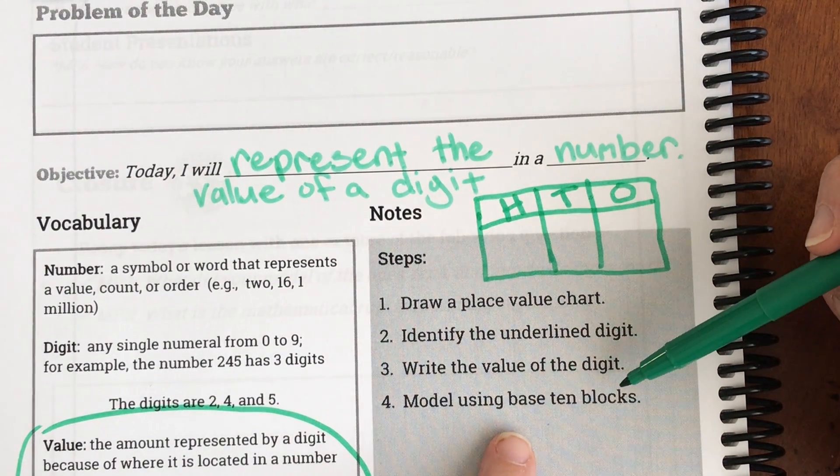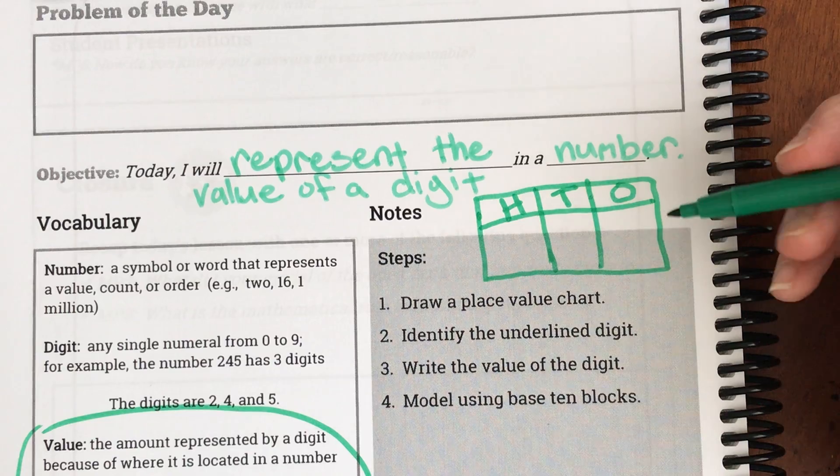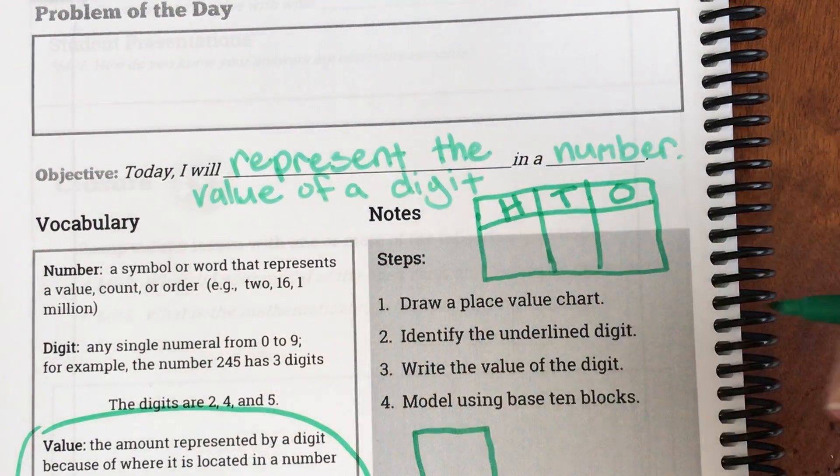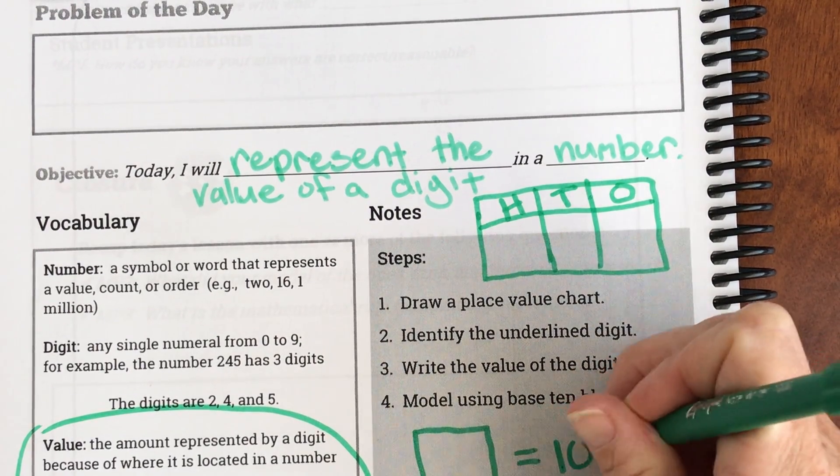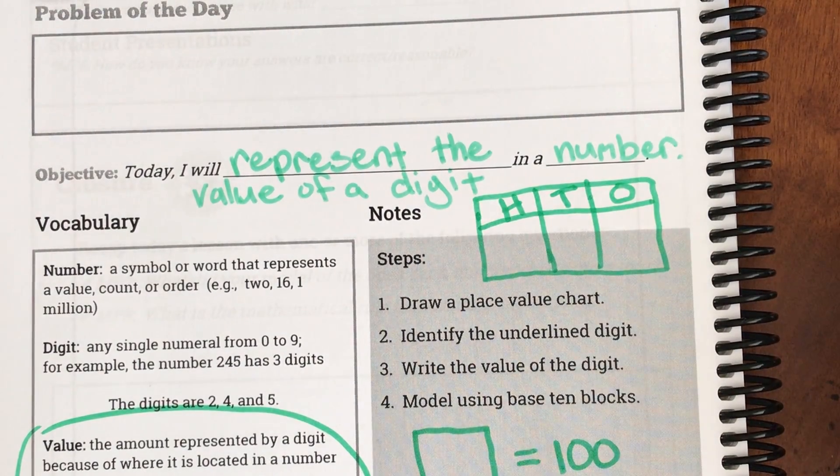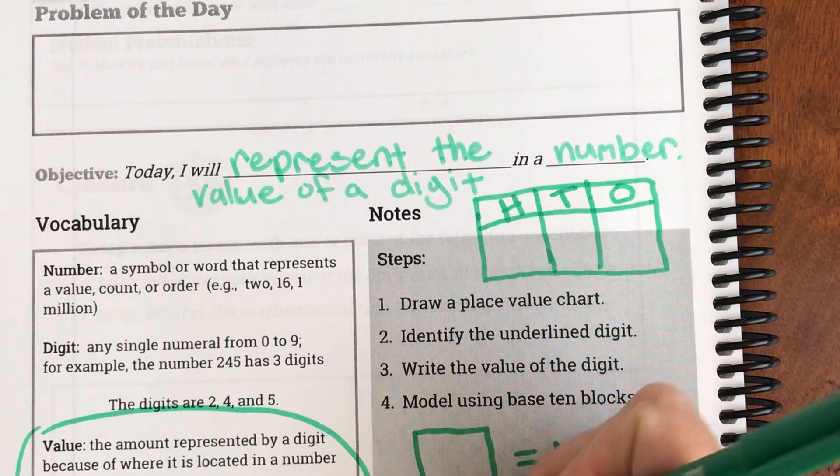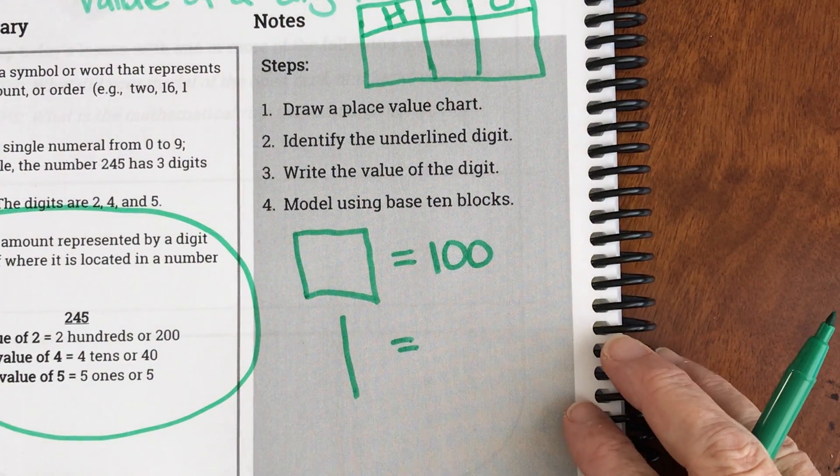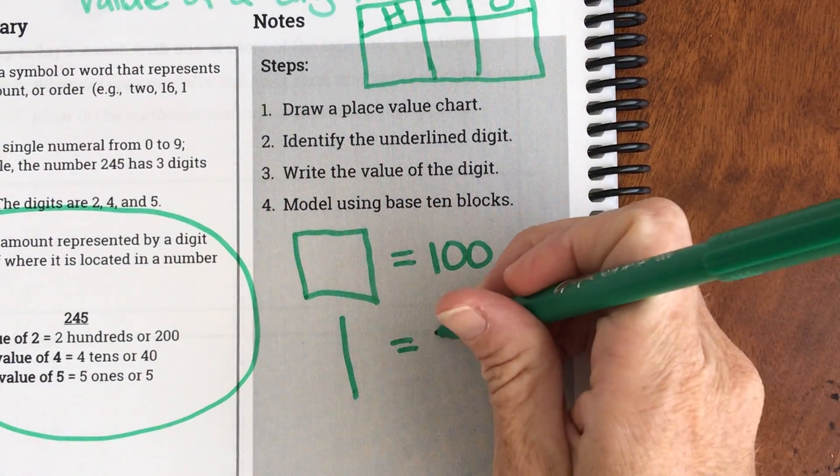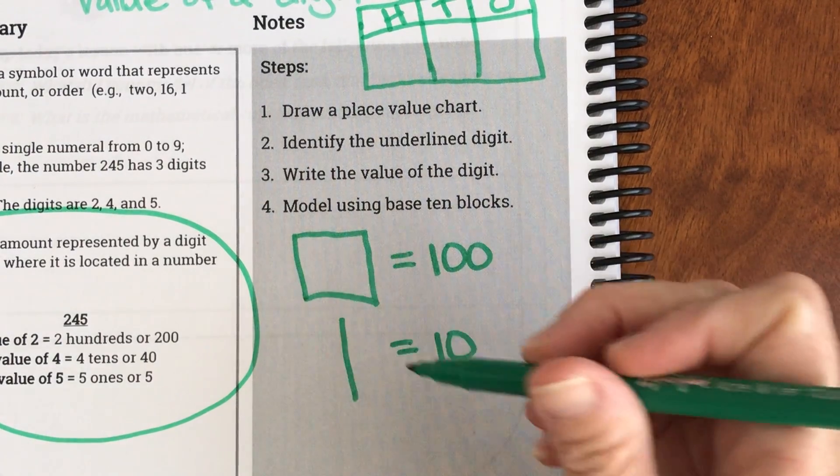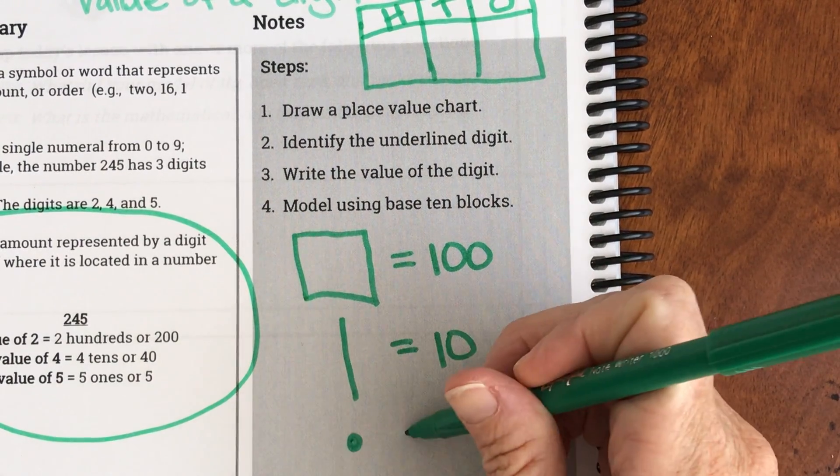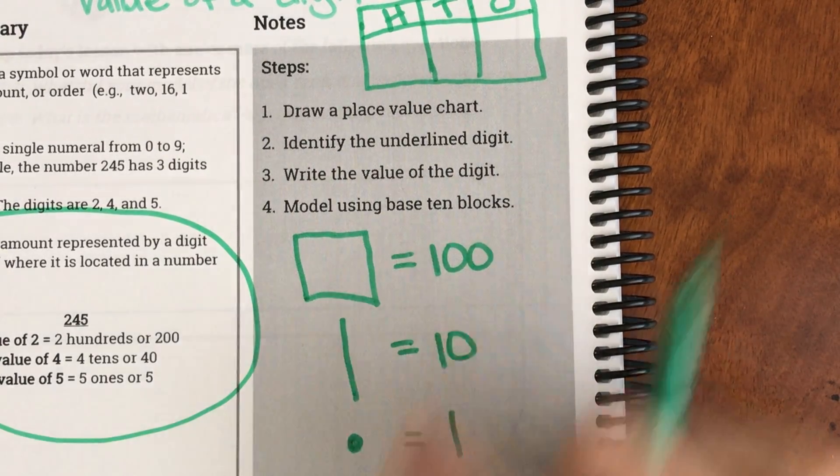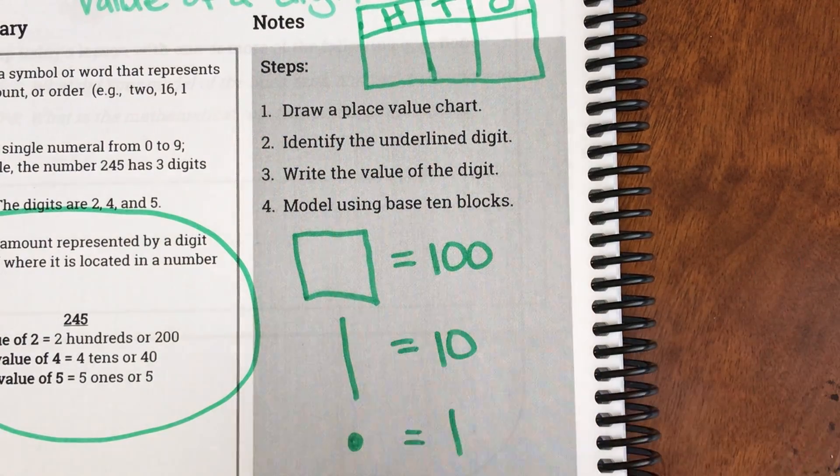It also says you're going to model using base 10 blocks. Okay so remember a hundred square or block looks like this. That is equal to 100. A 10 rod we draw like that. A 10 rod we draw like that and that is equal to 10. So it's not a one, it's a 10 rod. And then a dot is equal to a one unit. So it looks like that. This is how we'll be drawing them. So make sure that you have this down.